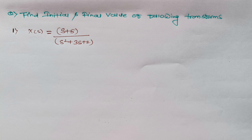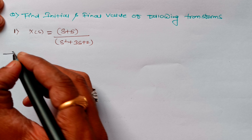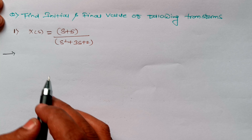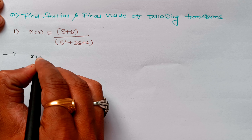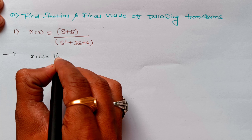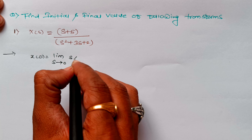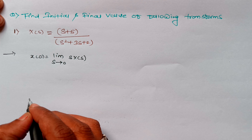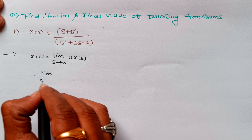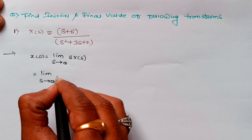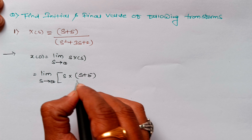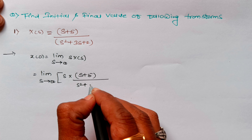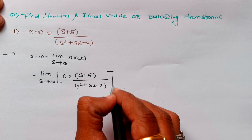In this video we will see examples on the Initial and Final Value Theorem. The question is: find the initial and final values of the following transform X(s). Let us start with initial value. As you know, the formula for initial value is: limit as s tends to infinity of s times X(s). We will put that value as s into X(s), which is (s+5) / (s²+3s+2).